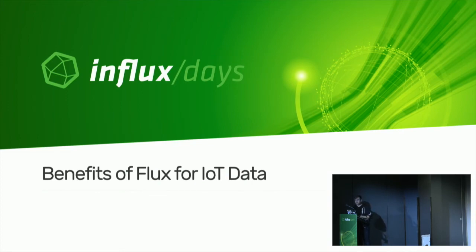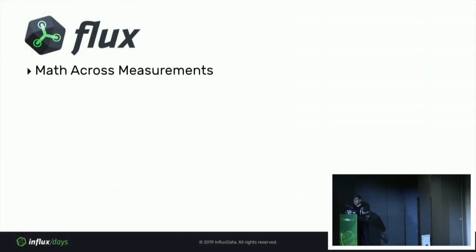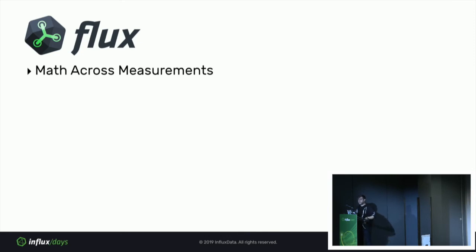I wanted to talk about the benefits of Flux for IoT data. Flux addresses a lot of issues that weren't solvable in InfluxQL before. The number one request was math across measurements, and now Flux lets you do that. Math across measurements enables use cases like the turbidity sensor example — where there are two separate measurements in the database, the turbidity data and the on/off data. Previously you would have needed Capacitor to work with those together; now you can turn to Flux and do really interesting things with data coming in from various streams.